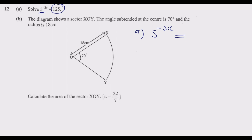In all cases, this base that we are given should be expressed in terms of the same base. So we need to express 125 as a power of base 5. How many times should we multiply 5 to give us 125? 5 times 5 is 25, times 5 again gives us 125. So I need to multiply 5 by itself three times, meaning 125 equals 5 to the power 3.